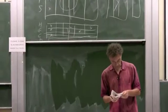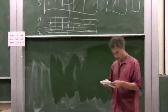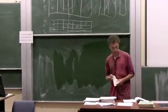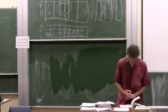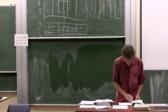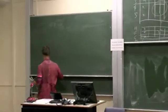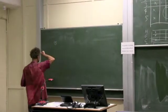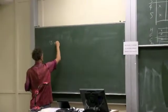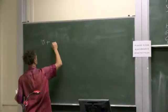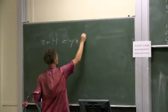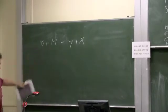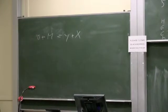Do you remember the national accounting identity we had in lecture 1? We had V plus M equals Y plus X. This being GDP and this being GNE, Gross National Expenditure, Gross Domestic Product. That was the fundamental national accounting identity.